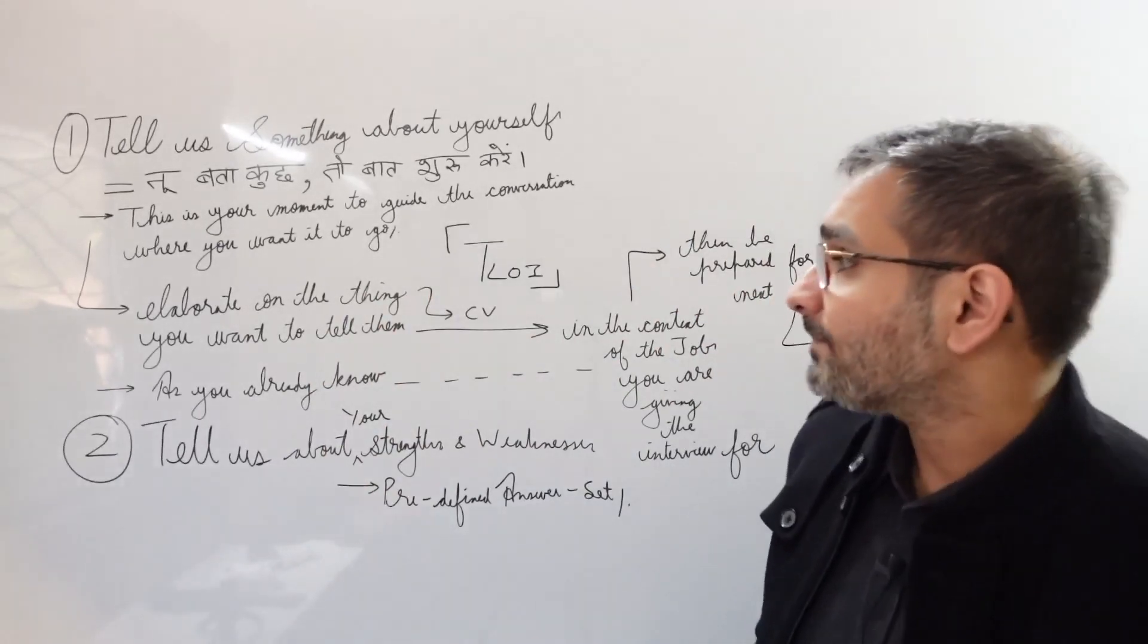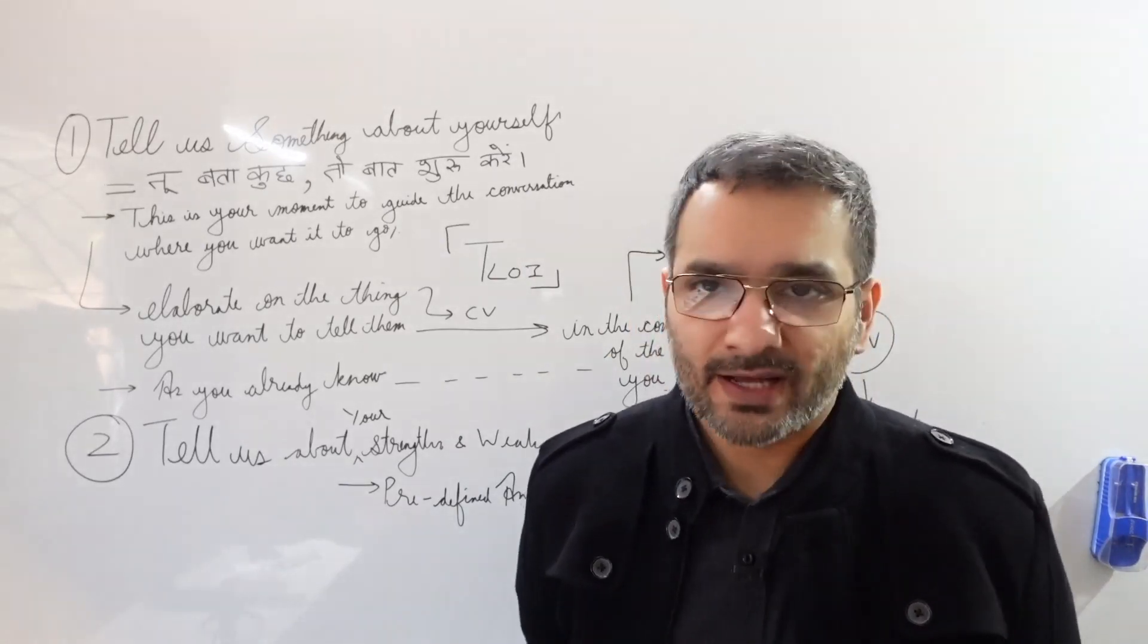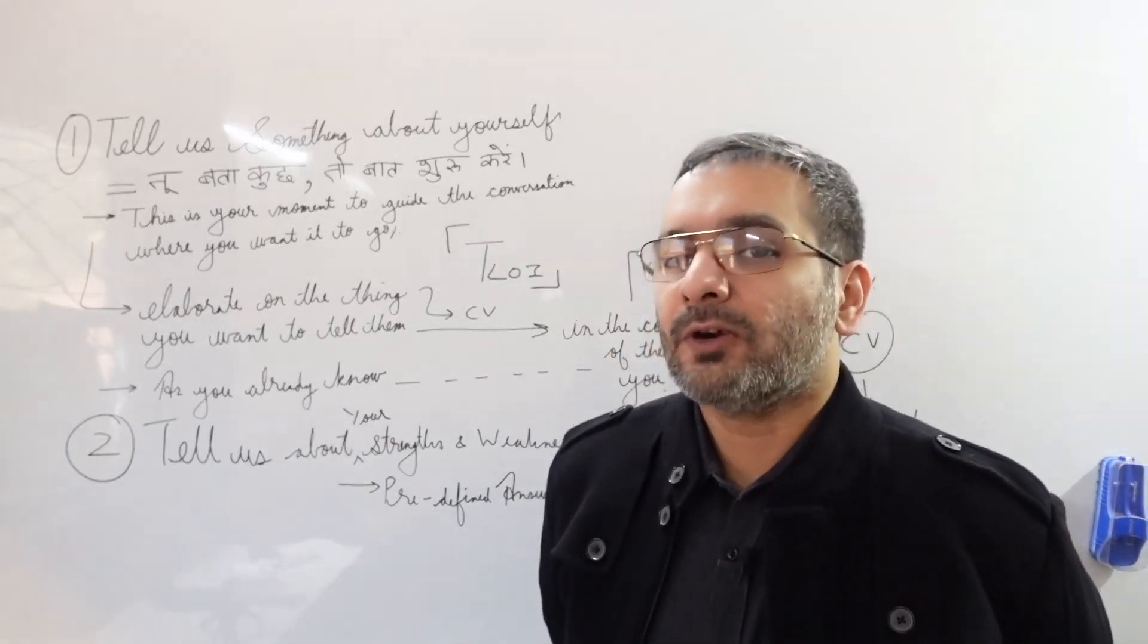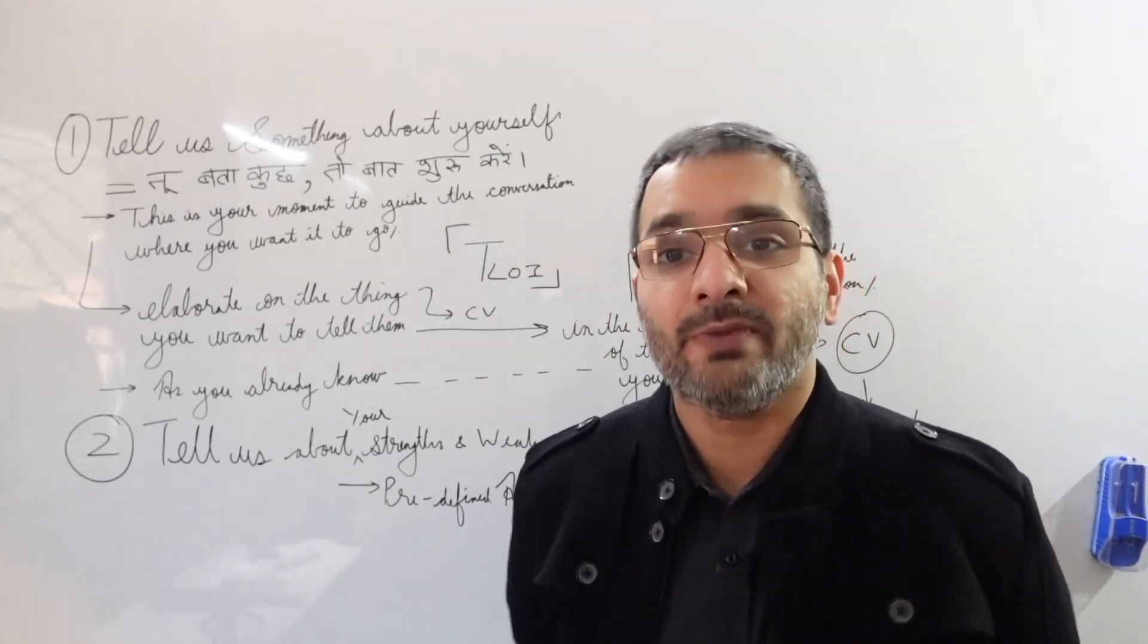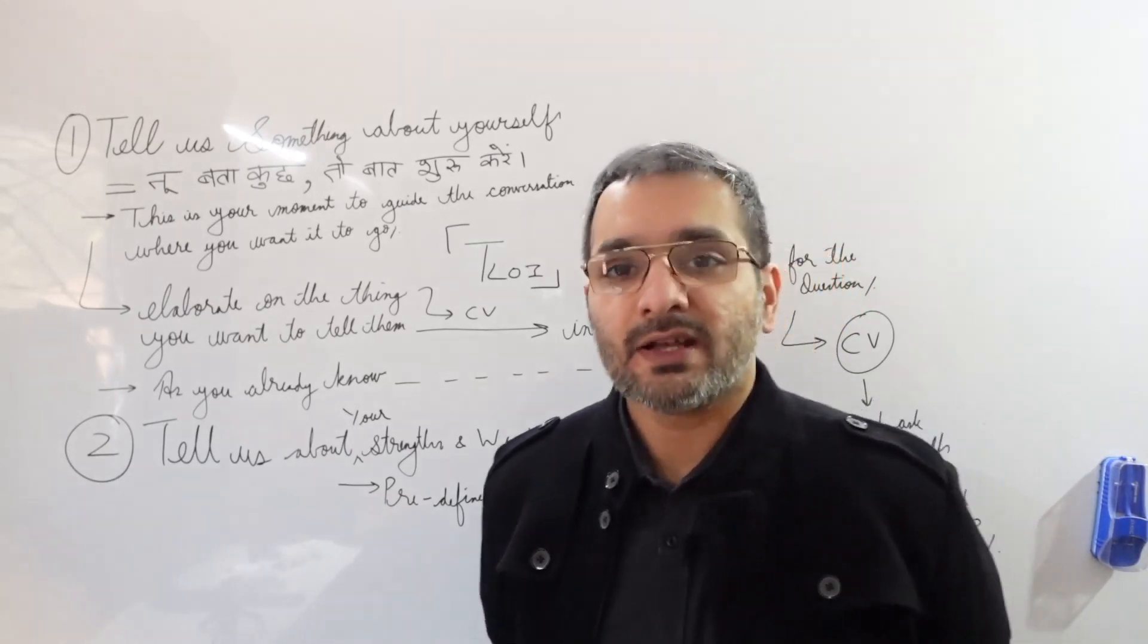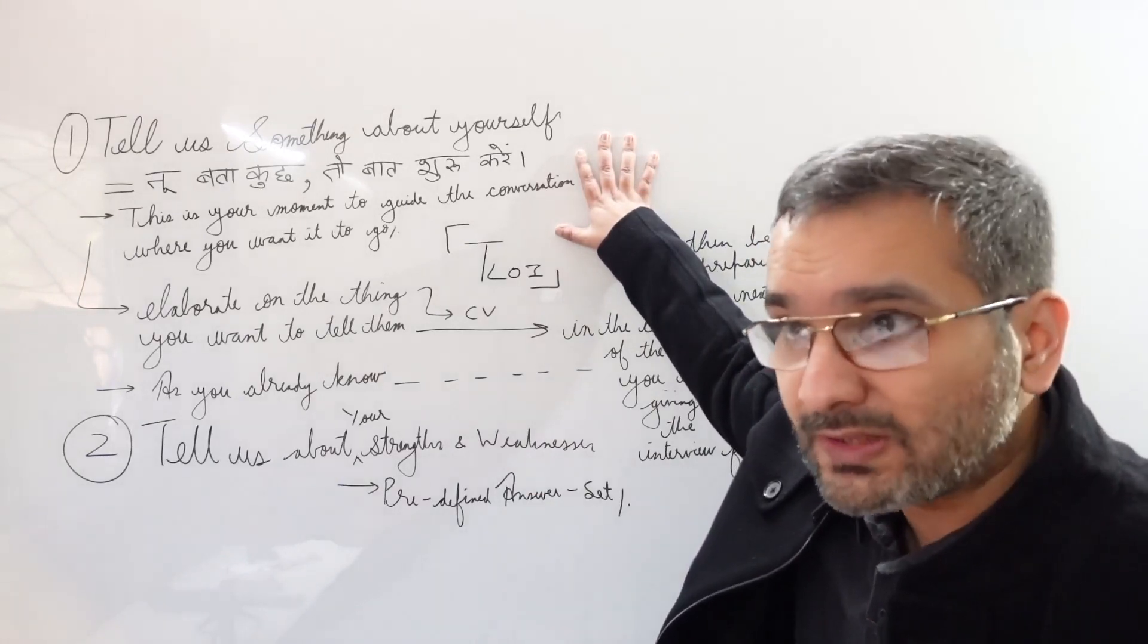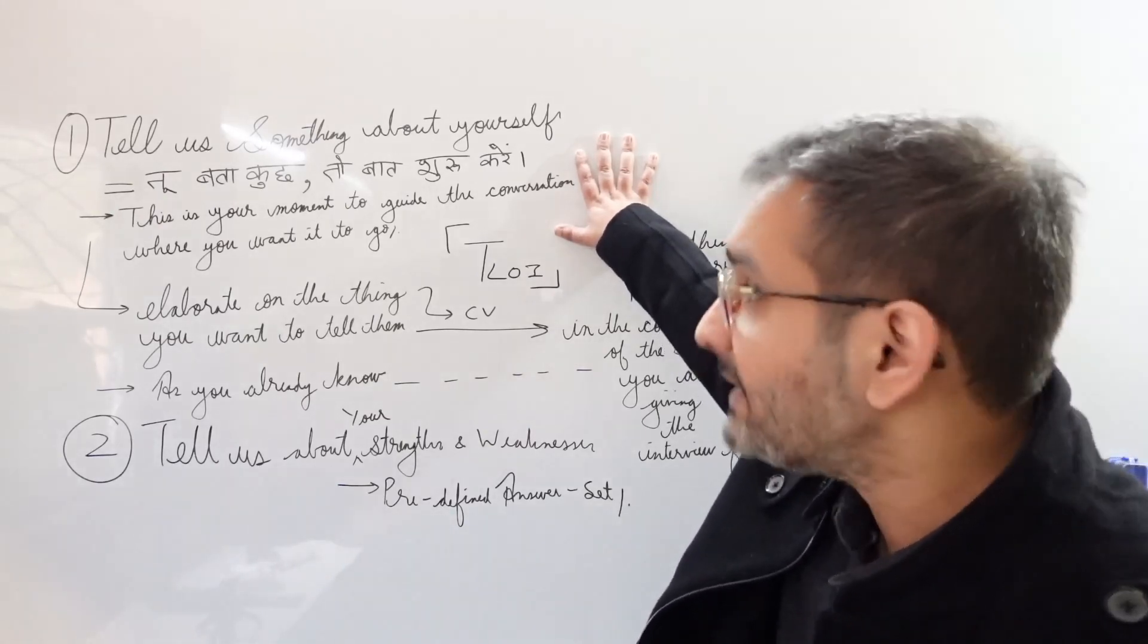For example, let's say on your CV it says moot court. So I did my graduation from any national law school or Delhi University and I was very keen and active in the moot court society. Think about it, what will the examiner really ask you? What moot courts? Which moot court did you participate in and how many? You need to have ready-made, ready-to-go answers for such questions. So expect such cross-questioning, because whatever you say here, it is your moment to guide the conversation where you want it to go next.